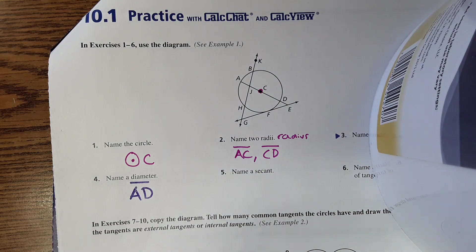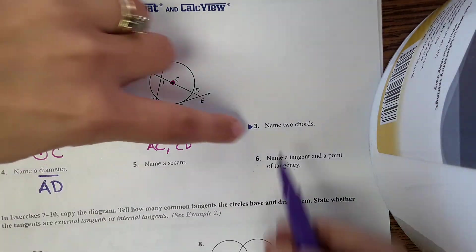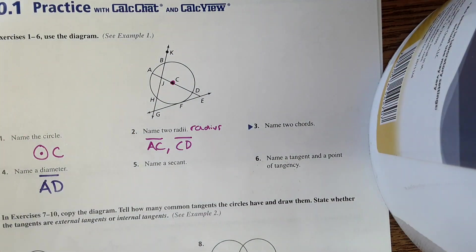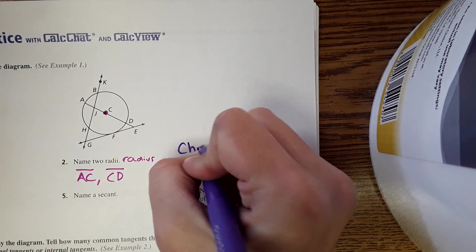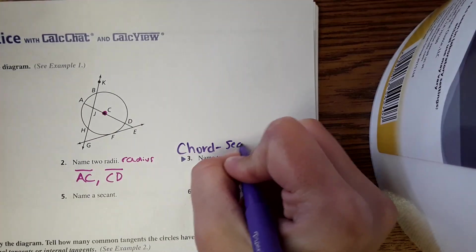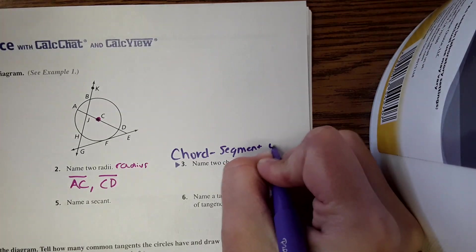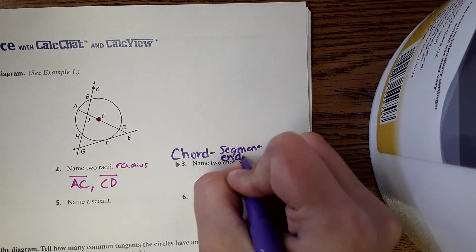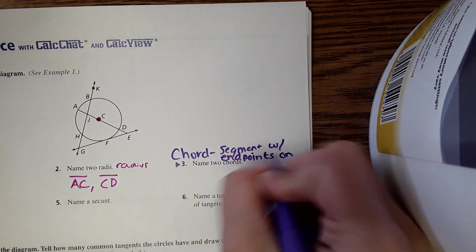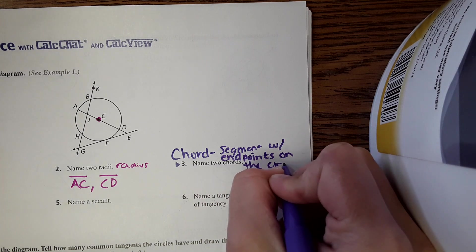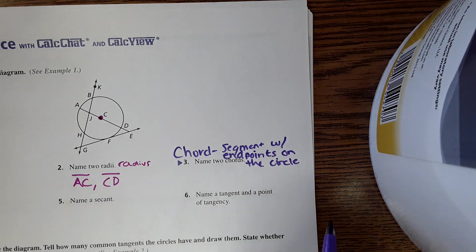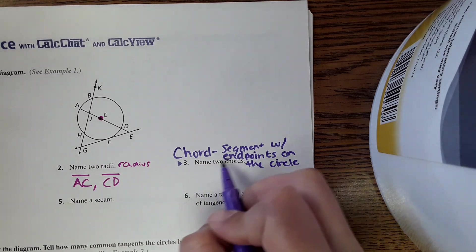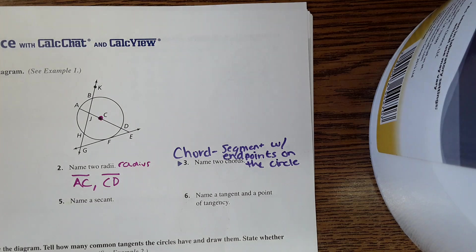And then we get to words that we don't know. Number three, it says name two chords. A chord, by definition, is a segment with endpoints on the circle. And some of the questions on your homework will be vocabulary like this—segments with endpoints on the circle.